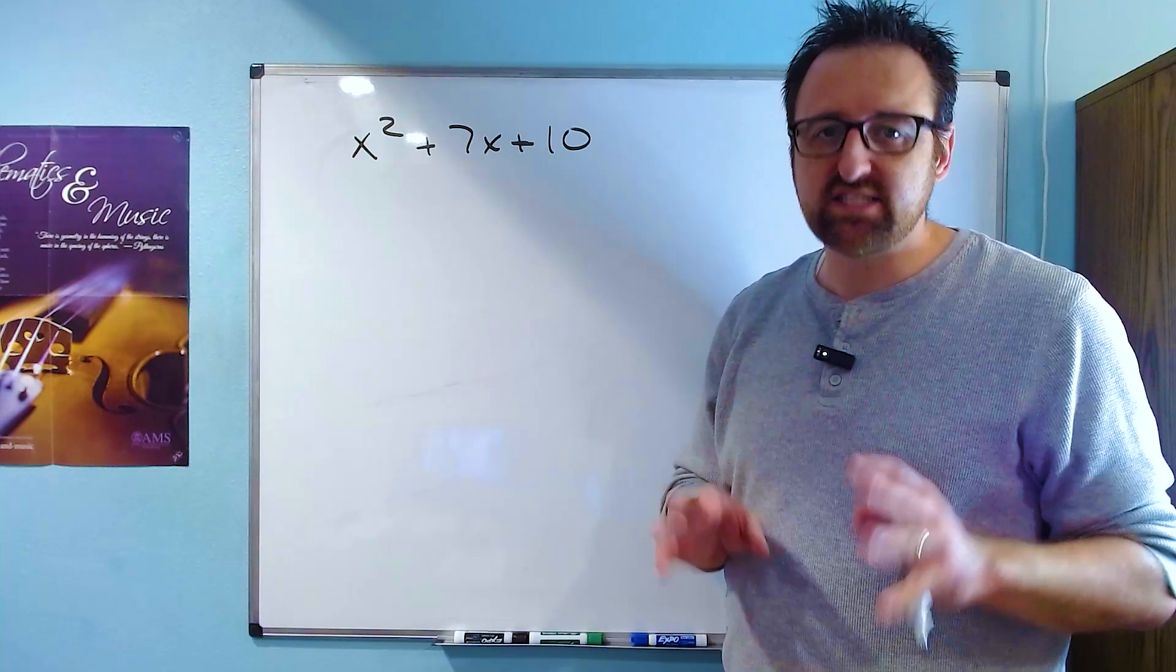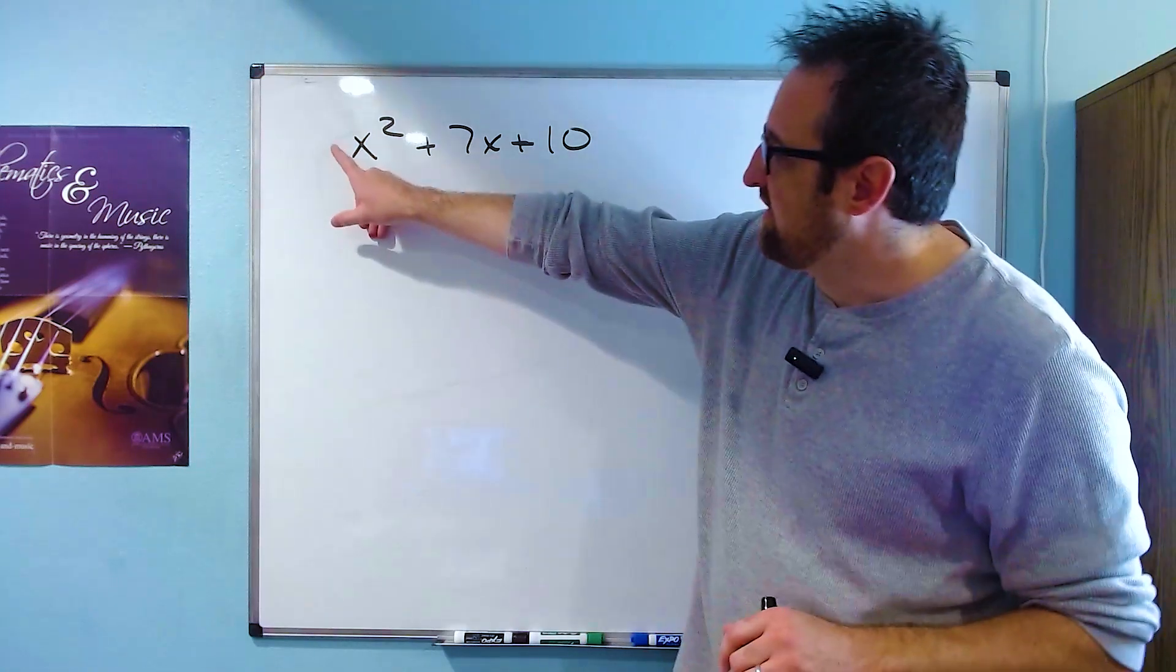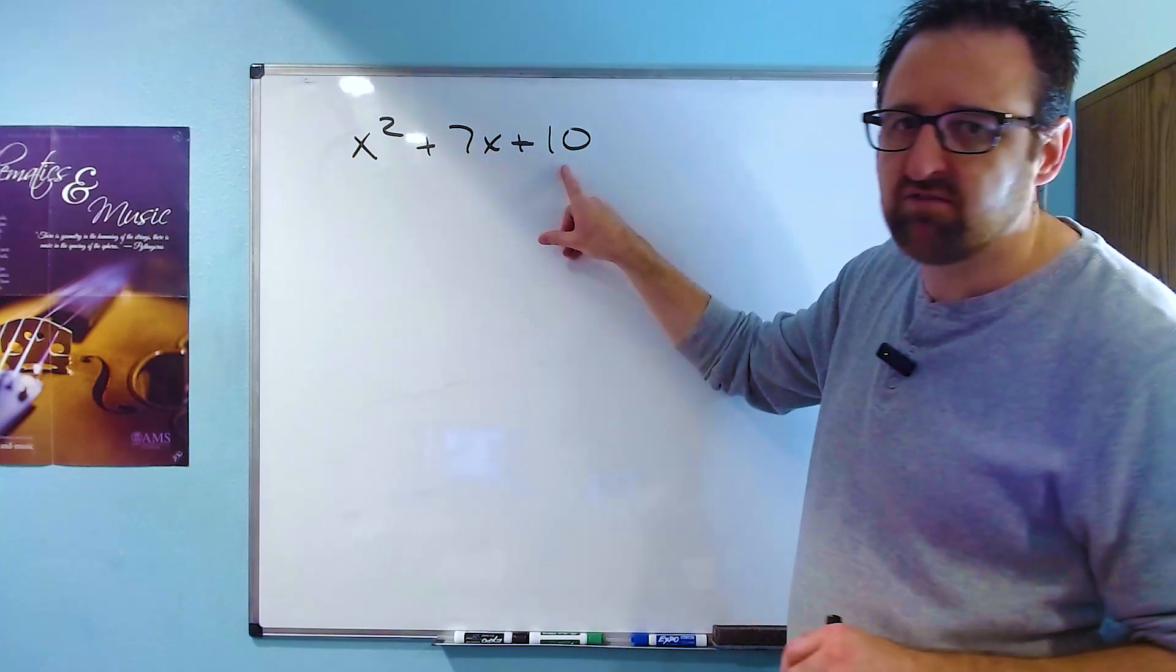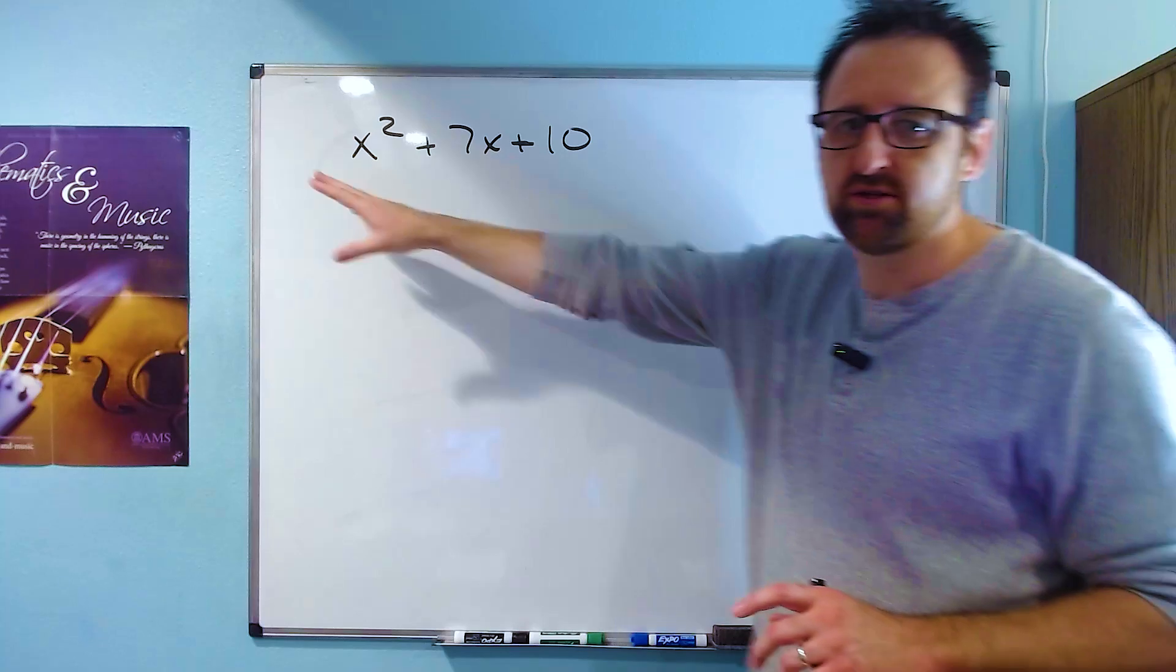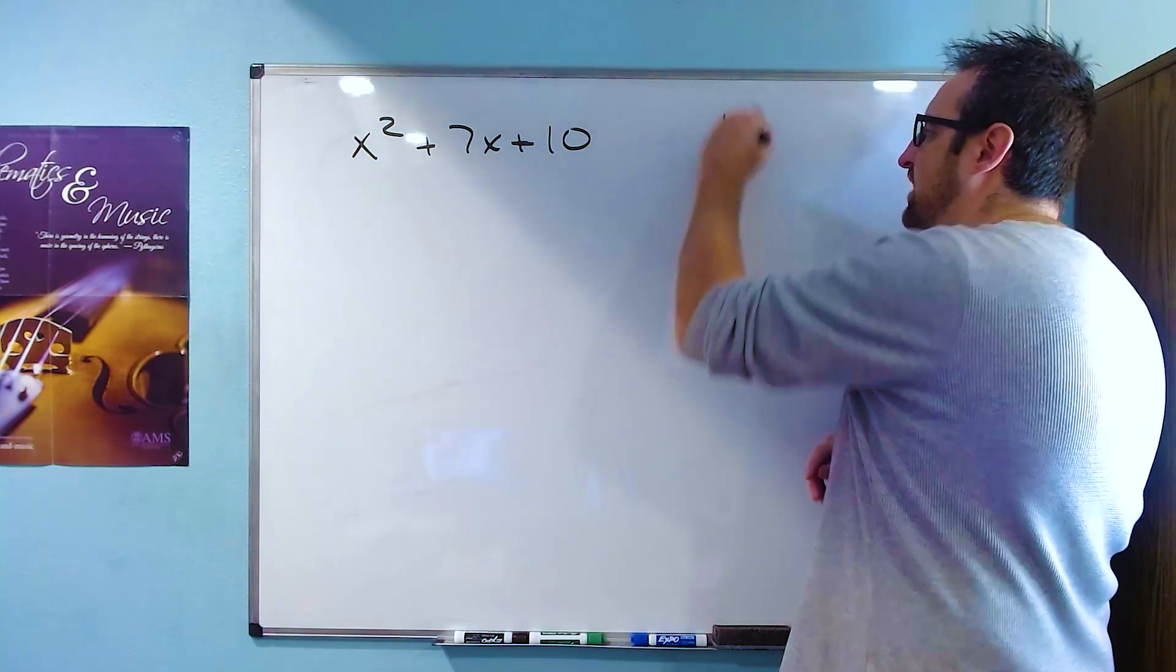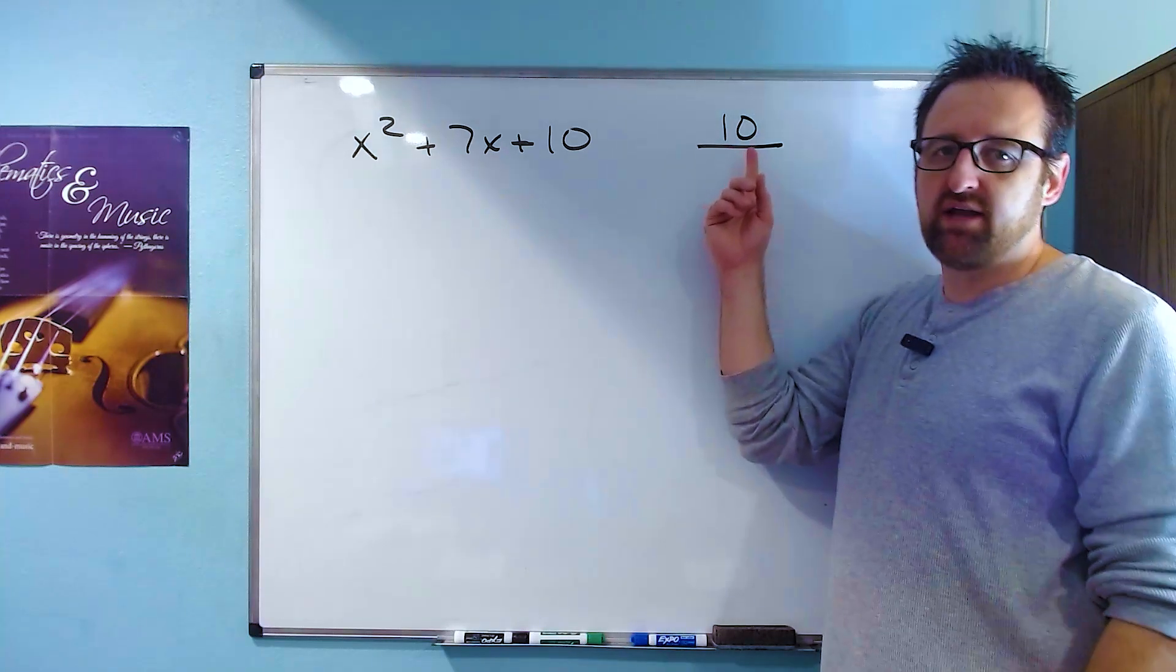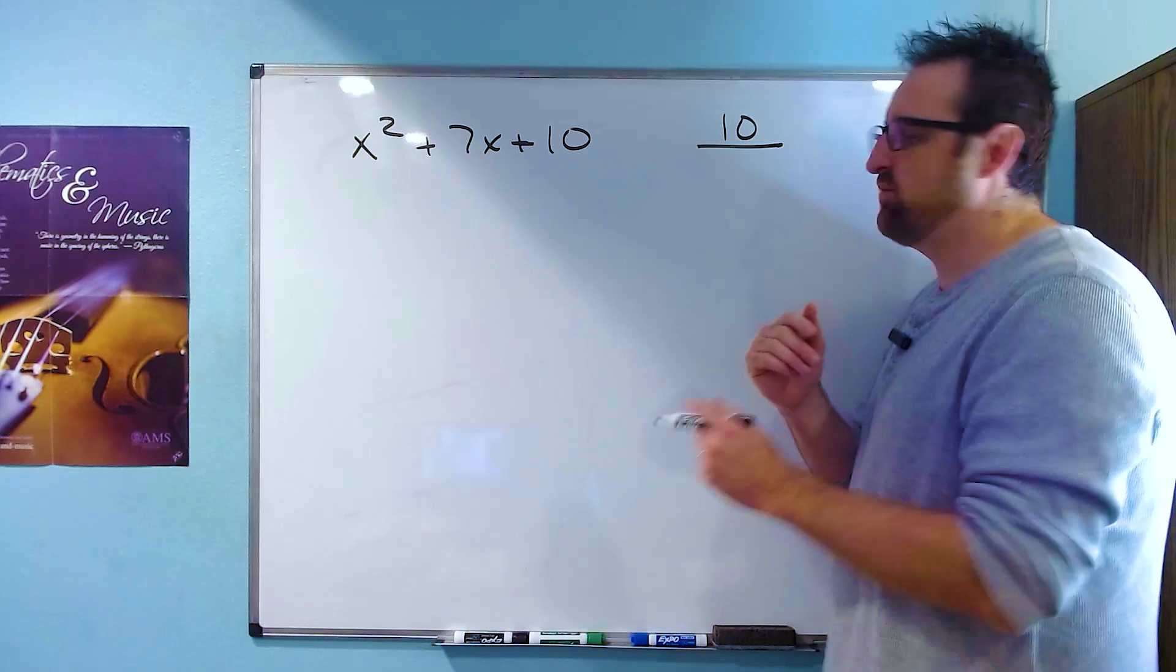So we're going to do this via an AC method that removes all guessing. To do this, we're going to look at the first and last coefficients here, the one in front of the x squared and the one on the 10, and we're going to multiply them together. When we do that, we get 1 times 10, which is positive 10.